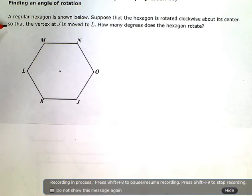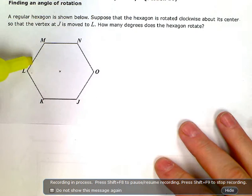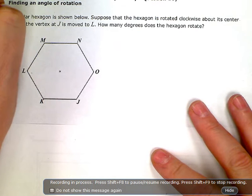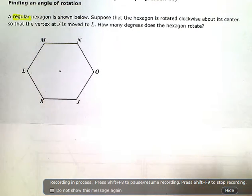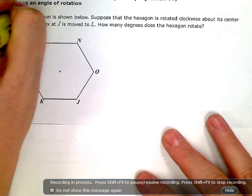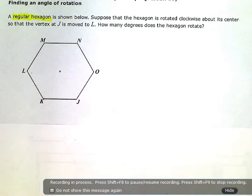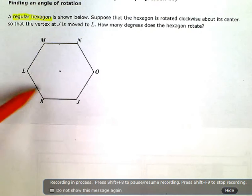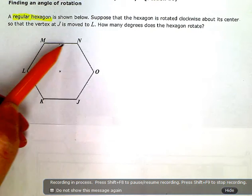So there's a couple of key words in this problem that are important to notice. First of all, a hexagon is just a six-sided figure. We can see we have six sides here, but this isn't just any old hexagon. It's a regular hexagon, which means that all of the sides are the same length and all of the angles are equal.